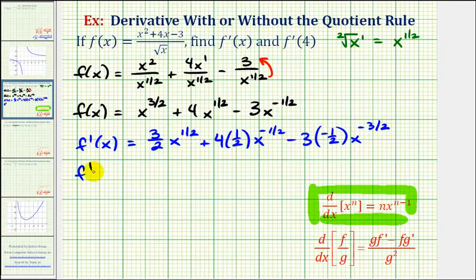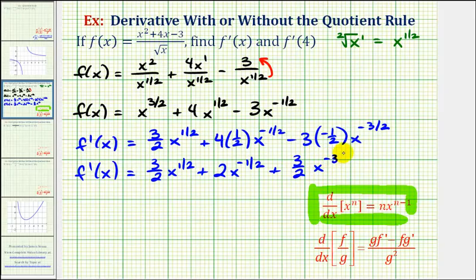Now let's go ahead and simplify this. This would be plus two x to the negative one-half. This would be plus three-halves x to the power of negative three-halves.